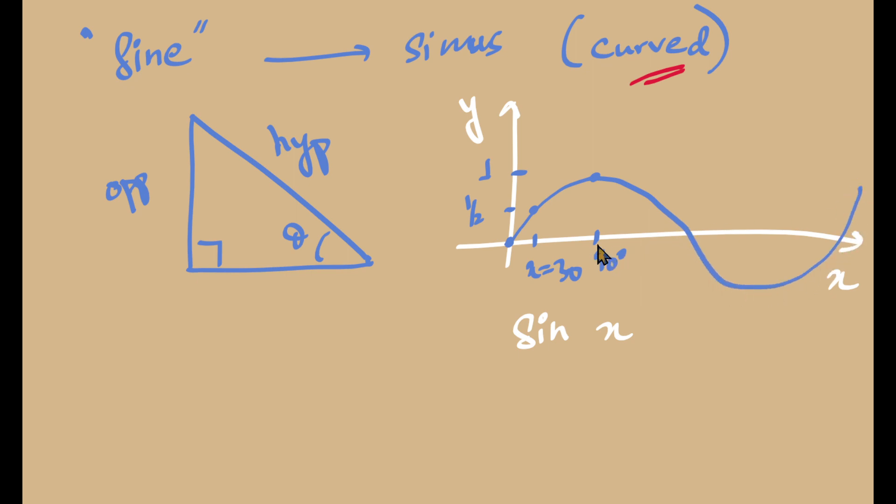Even though we haven't discussed sines for angles greater than 90, because we have this triangle definition, we'll soon extend our definitions in higher grade. And it will go beyond the triangles. And we get a curve like structure. And this is where sine comes from.